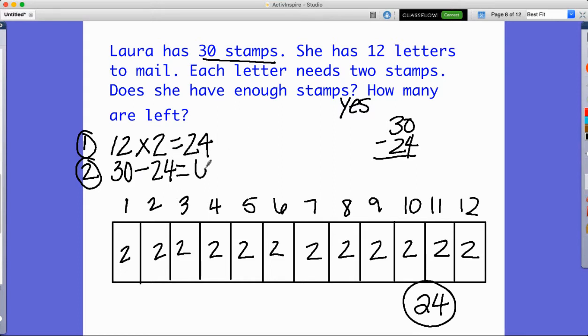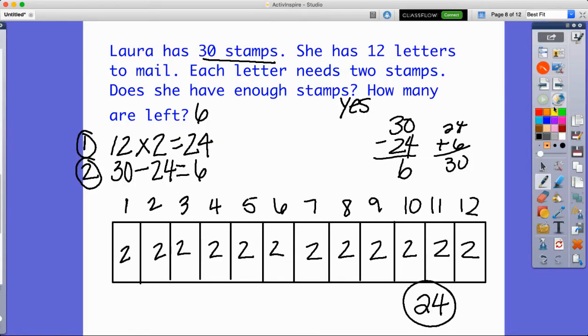So that would be six. If I count up and I can check that 24 plus six is 30. So that's correct. So I'm just going to count up to get that answer. So how many does she have left? She has six stamps left. Now I'm going to ask you another question. How many more letters could she send if she has six stamps left over? Well, she could send three more letters if she wanted to.